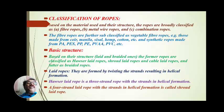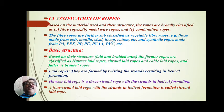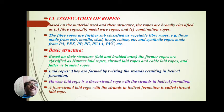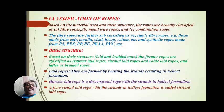The fiber ropes are further sub-classified as vegetable fiber ropes — for example, those made from coir, manila, sisal, hemp, and cotton — and synthetic fiber ropes, made from polyamide, polyester, polypropylene, polyethylene, PVA, and polyvinyl chloride (PVC).